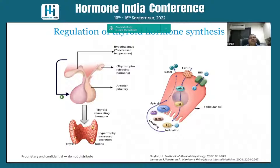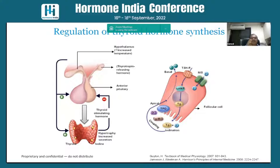We have a positive effect from hypothalamus to pituitary, which has a positive effect on the thyroid. Thyroid hormones have negative feedback effects. So if T3 and T4 are high, you have suppressed TSH, and if they are low, TSH rises. And T4 mainly gets converted in the liver, kidney, and periphery to T3, which is more active compared to T4.